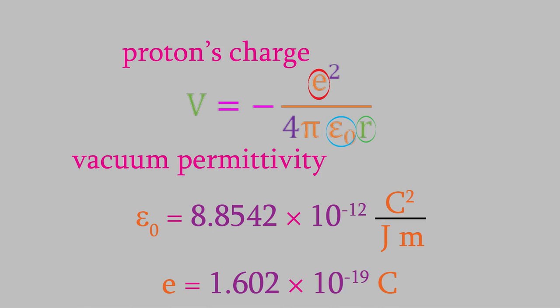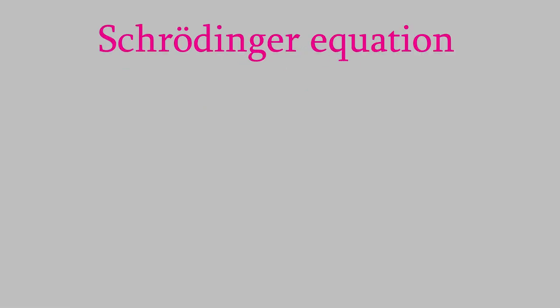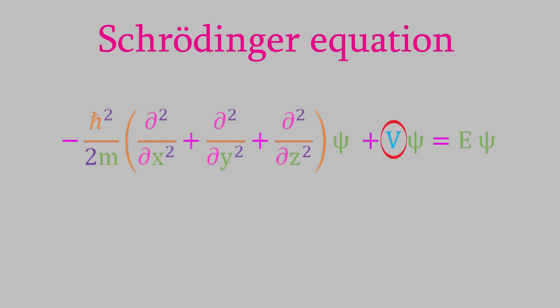So, why do you need to know that potential energy equation? Well, you might remember that in quantum mechanics, the equation we use to determine the energy of a system is the Schrödinger equation, which is this in Cartesian coordinates. You might also recall that the second term here is for the potential energy, and in the case of a hydrogen atom, the potential energy is given by the Coulomb potential equation we just saw. Plugging that into the Schrödinger equation gives us this.